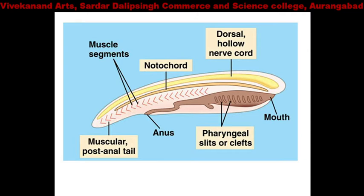In this schematic representation of chordates, you can see pharyngeal gill slits (respiratory organ), dorsal hollow nerve cord, and below that the notochord structure extending up to the tail region. Hemichordata also shows this kind of characteristics.